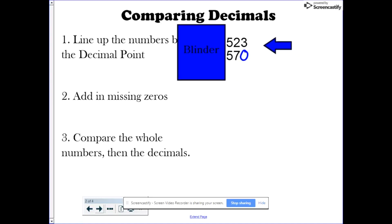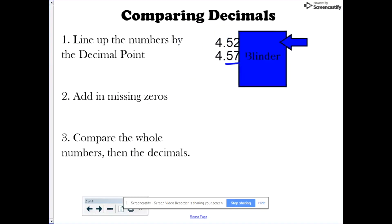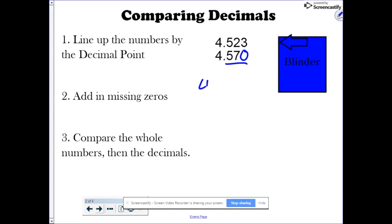As you can see, it's 523 in 570. Clearly, the 570 is the larger number. Therefore, 4 and 57 hundredths is greater than 4 and 523 thousandths.